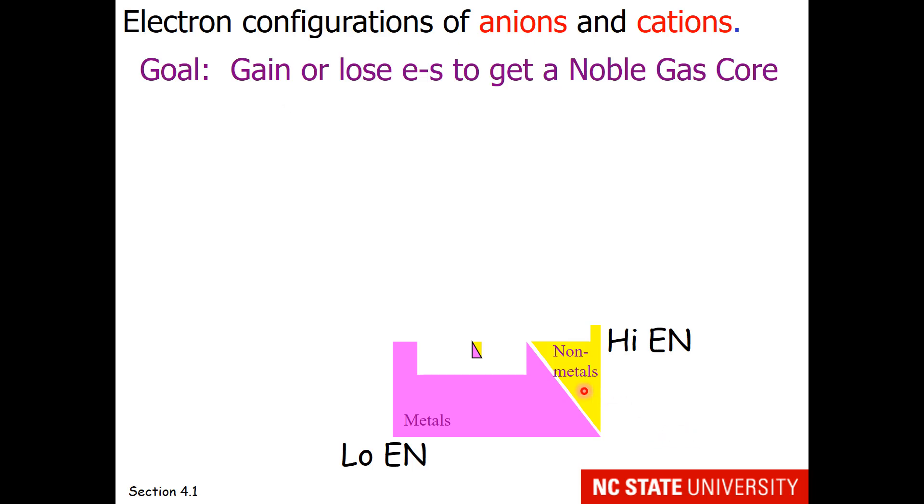Remember that non-metals have high electronegativity, and metals have low electronegativity and low ionization energy. That means non-metals are electron grabbers, metals are electron givers.